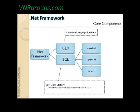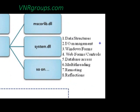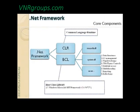The CLR provides different types of libraries for different types of programs. It contains data structures, I/O management, Windows Forms, web forms and controls, data access, multi-threading, remoting, and reflection. We'll look at what reflection is at the end of today's session.